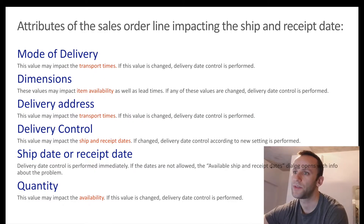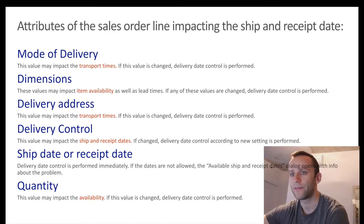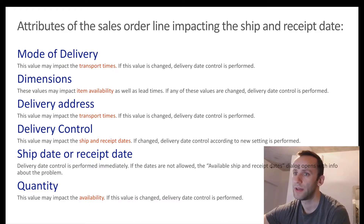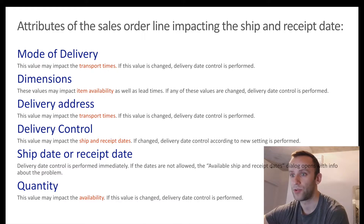Here is a list of attributes for the sales order line that impact the ship and receive date. We have mode of delivery - we can have different dates depending on the delivery type. We have dimensions - for example if you want to ship from warehouse A instead of warehouse B. We have delivery address, which will change your lead time depending on the transport time set to a specific state or region. Then you have delivery control type, quantity which impacts whether you have enough on stock, and your ship or receive date.